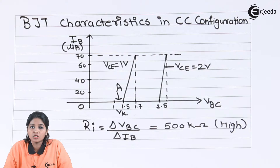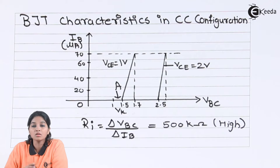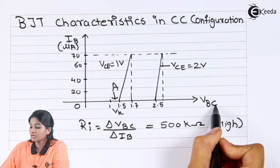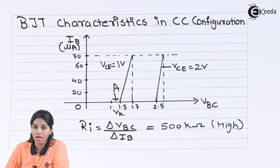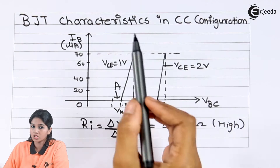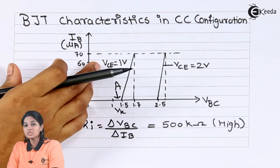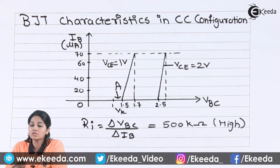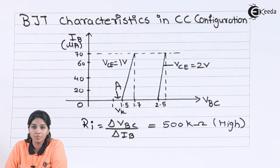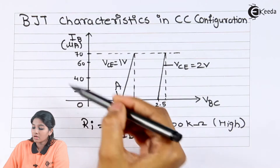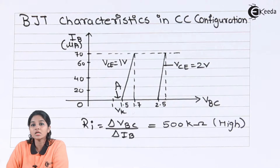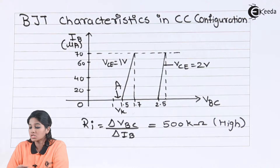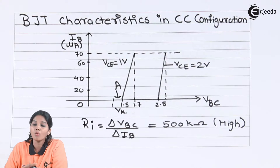Now let's see the input characteristics of common collector configuration. Input characteristics in common collector is a relationship between base-collector voltage (VBC) and base current (IB). We plot VBC on the x-axis and IB on the y-axis for a constant value of collector-emitter voltage (VCE). This characteristic is obtained by keeping VCE constant, then increasing VBC in suitable steps — as VBC increases, base current starts increasing. After taking readings, we plot the graph with VBC on x-axis and IB on y-axis, then repeat the procedure for VCE = 2V.